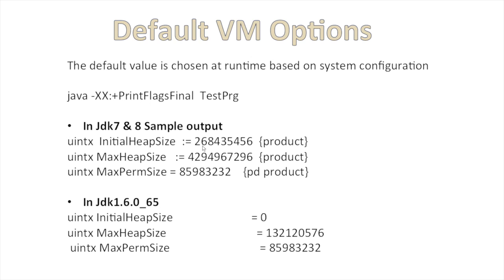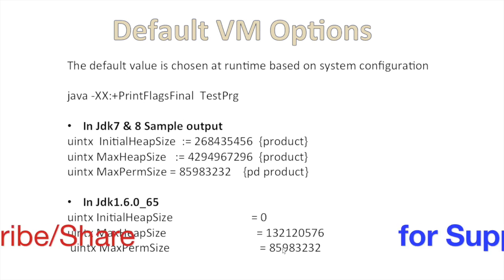In JDK 7 and 8, the heap value depends on the RAM size. In this case with 16 GB RAM, it gives 2.6 GB of initial heap size and 4.2 GB of max heap size. In the case of JDK 1.6, the initial heap size is 0, the max heap size is 1.3 GB, and the max PermGen size is 0.5 MB.